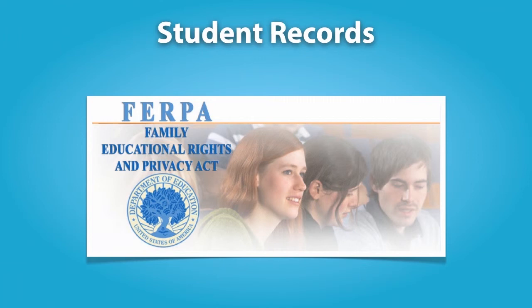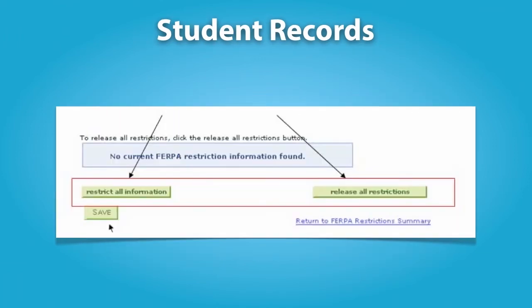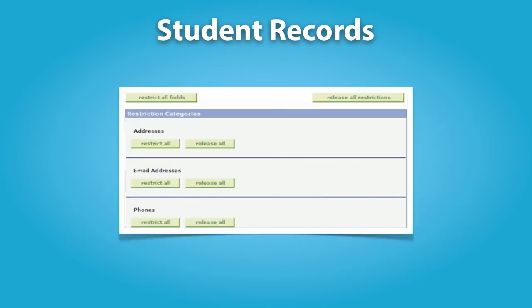Generally, schools must have written permission from the parent or eligible student in order to release any information from a student's education record. However, FERPA allows schools to disclose those records without consent to certain parties, including school officials with a legitimate educational interest, other schools to which a student is transferring, to comply with a judicial order or lawfully issued subpoena, and appropriate officials in cases of health and safety emergencies. Schools may also disclose without consent so-called directory information, such as a student's name, address, telephone number, date of birth, honors and awards, and dates of attendance.